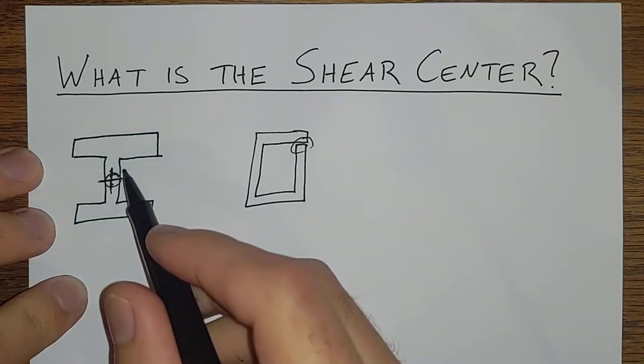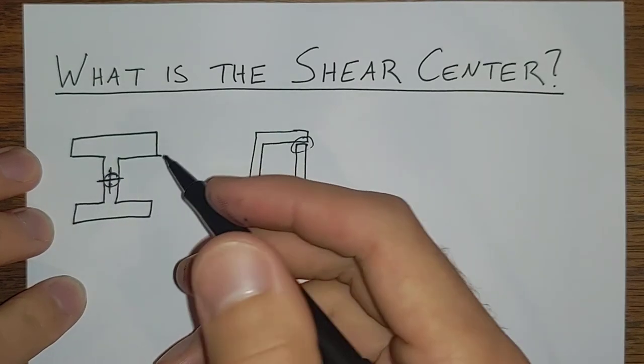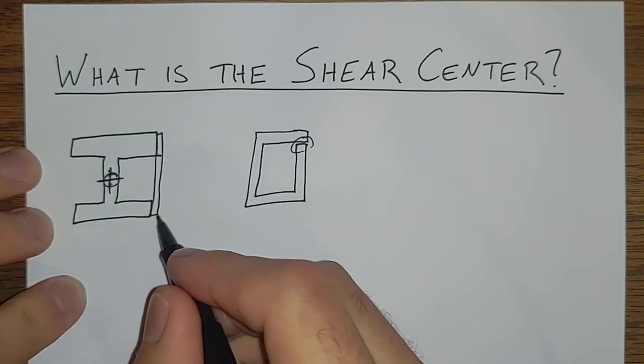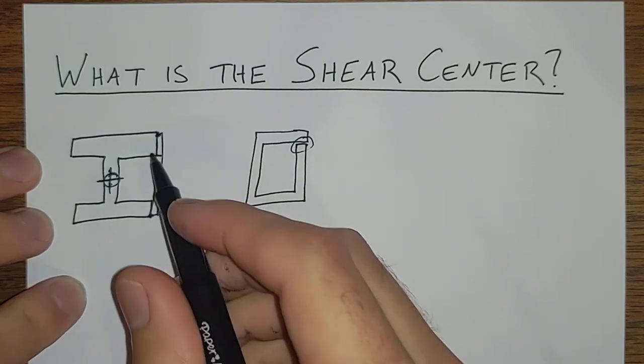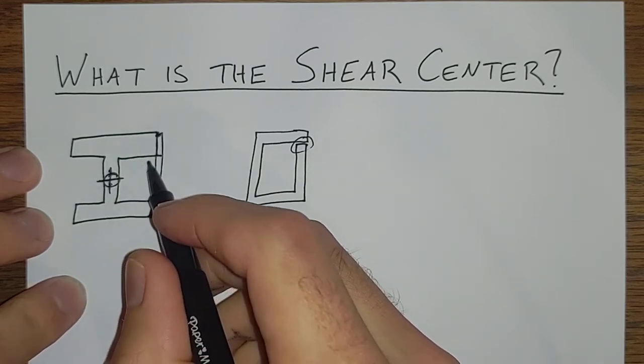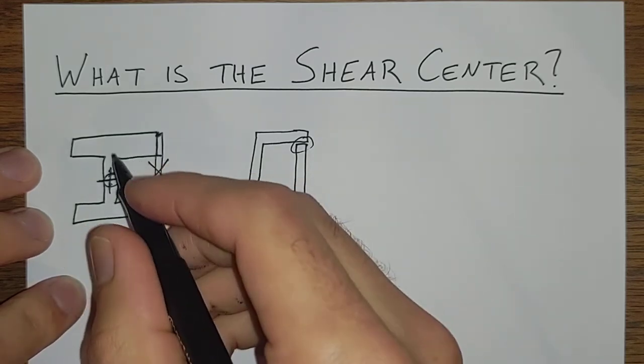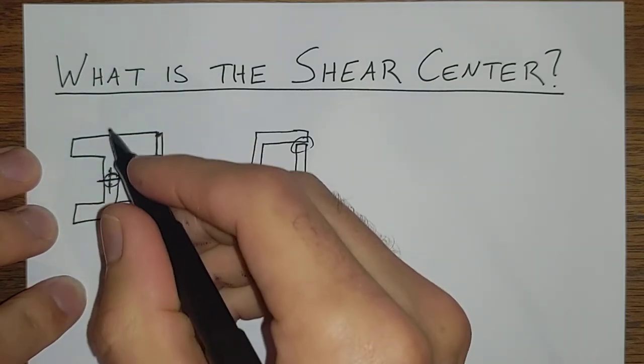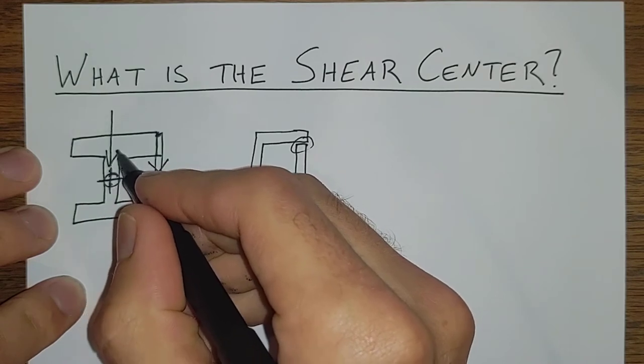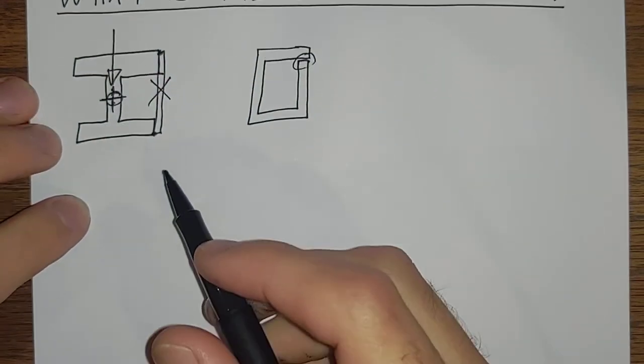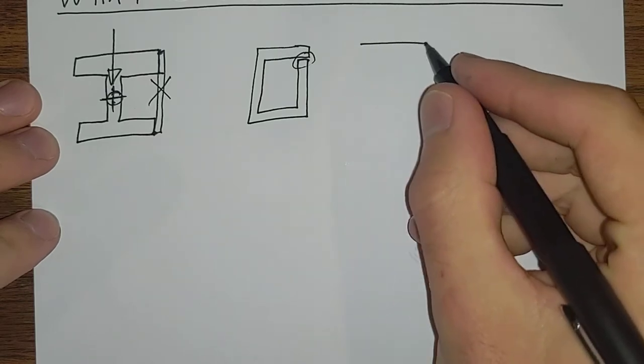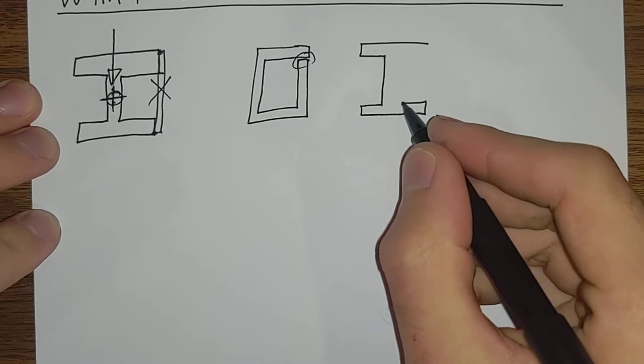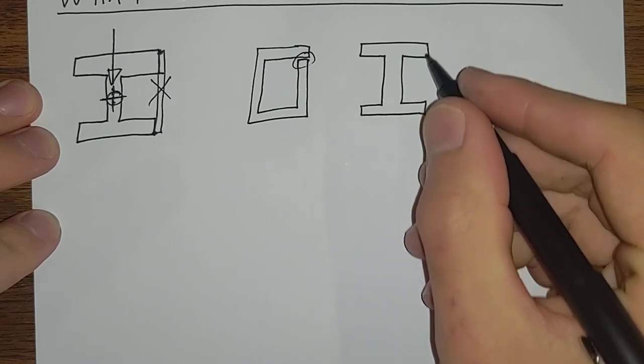So we don't want to induce torsion on this shape. Similarly, we don't want to induce torsion on an I-beam. I-beams are awful under torsion, and oftentimes you would have to weld a plate on here to give it a little bit of torsional stiffness. But ignoring that plate for a second, that's a weird looking I-beam, but that'll do.